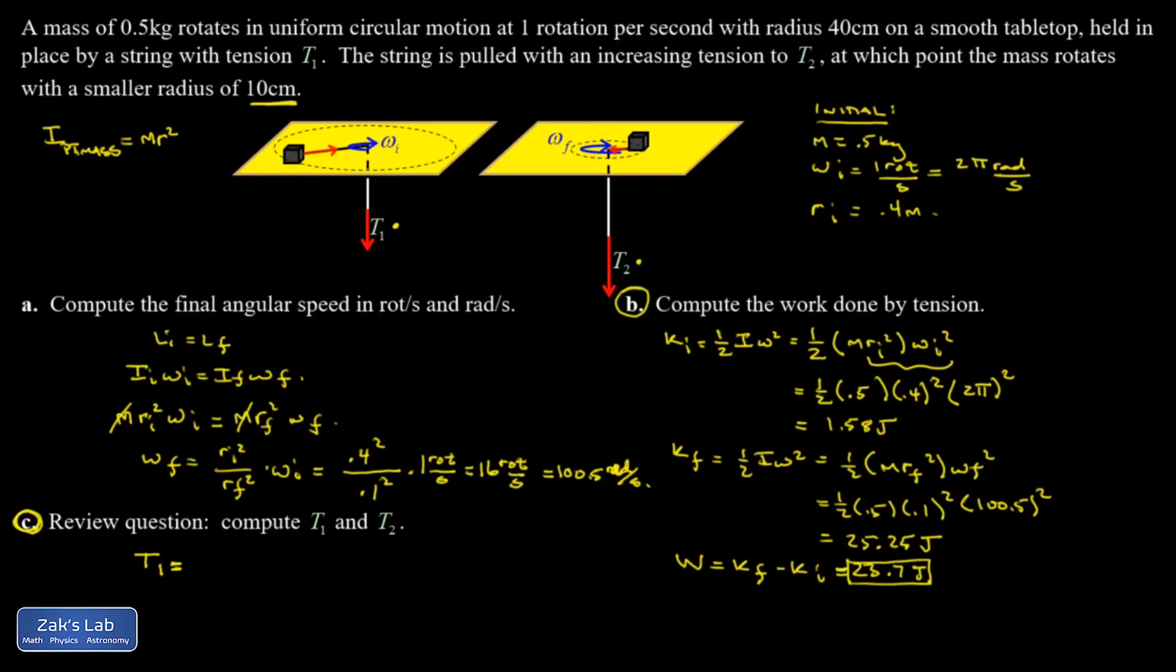So T1 is the same as the tension in the string where it attaches to the mass. And that tension is supplying the entire centripetal force. So I'm just thinking F equals ma. What's my net force in that radial direction? It's T1. And it's got to be equal to m times a. And a is v squared over r if you want to write it that way. But that's the same as r omega squared, which is more convenient here. So I get 0.5 times 0.4 times omega initial squared. So 2π all squared, which gives me 7.90 newtons.